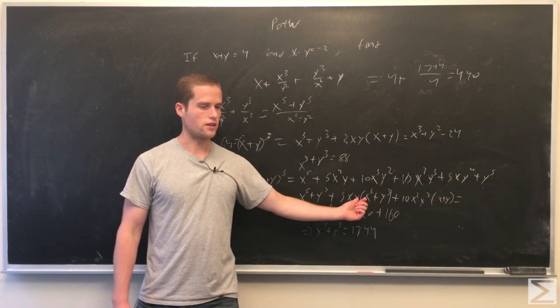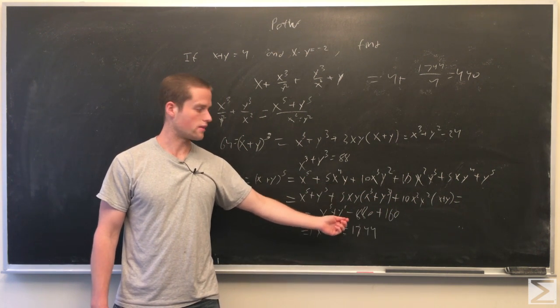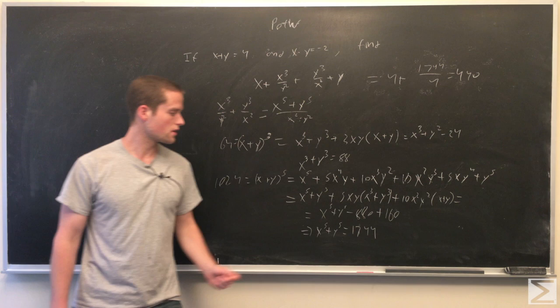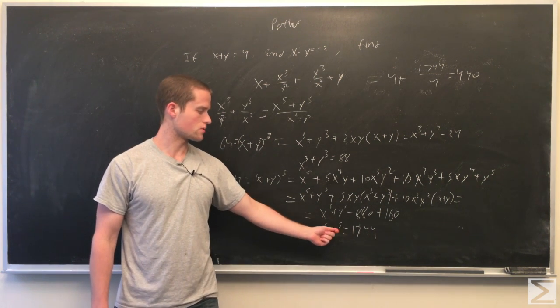So this is minus 880, this is plus 160, so we get this equals x to the fifth plus y to the fifth minus 880 plus 160 equals 1024. From this we get x to the fifth plus y to the fifth equals 1744.